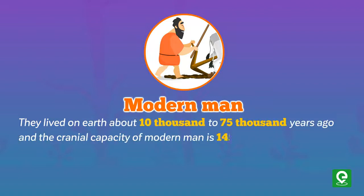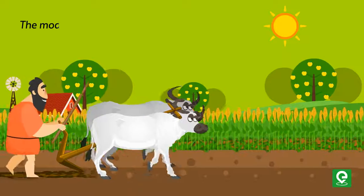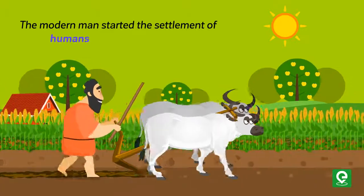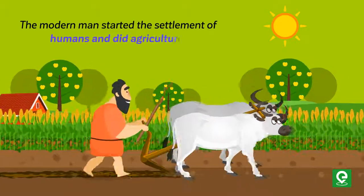Modern man lived on Earth about 10,000 to 75,000 years ago. The cranial capacity of modern man is 1450 CC. Modern man started the settlement of humans and practiced agriculture.